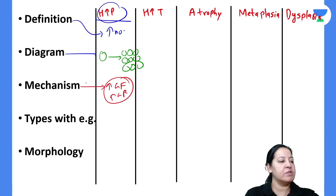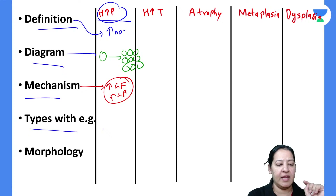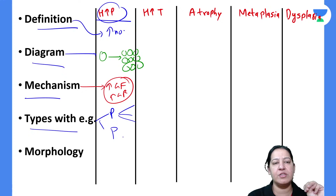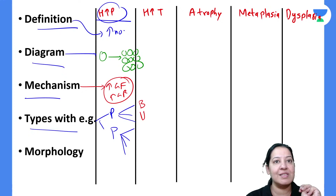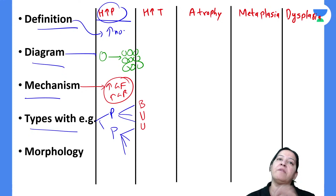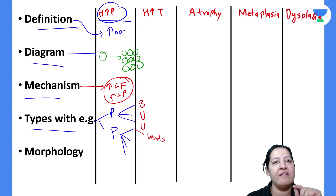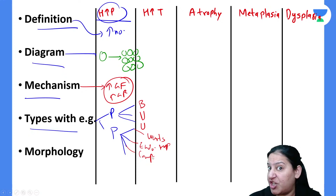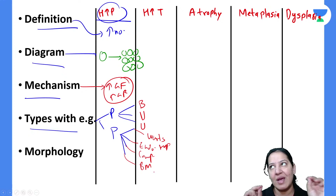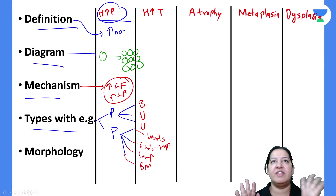Summary of hyperplasia: definition done — increase in number, not size. Mechanism done — increase in growth factors and growth factor receptors. Two types: physiological and pathological. Physiological examples: female breast during puberty, pregnancy, and lactation; uterine myometrium during pregnancy; endometrium after menstruation. Pathological examples: skin warts (HPV), endometrial hyperplasia (estrogen excess), compensatory hyperplasia (partial organ resection), bone marrow in hemolytic anemia.